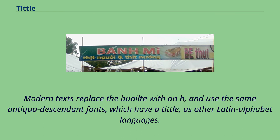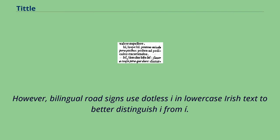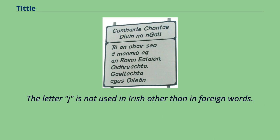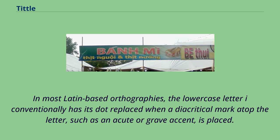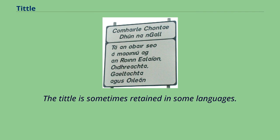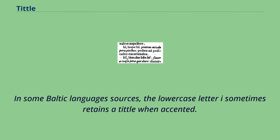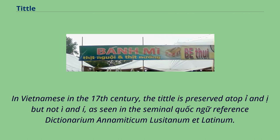Modern texts replace the buailte with an h and use the same Antiqua-descended fonts which have a tittle as other Latin alphabet languages. However, bilingual road signs use dotless i in lowercase Irish text to better distinguish i from e. The letter j is not used in Irish other than in foreign words. In most Latin-based orthographies, the lowercase letter i conventionally has its dot replaced when a diacritical mark such as an acute or grave accent is placed atop the letter. The tittle is sometimes retained in some languages — in some Baltic language sources, the lowercase letter i sometimes retains a tittle when accented.